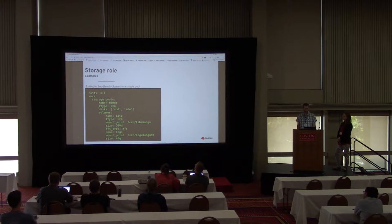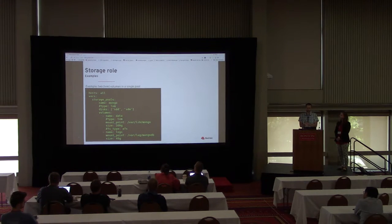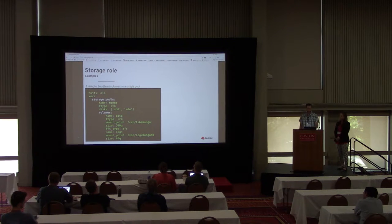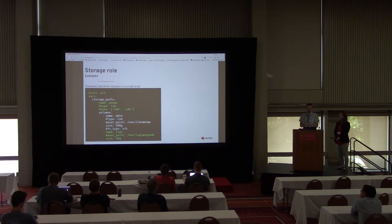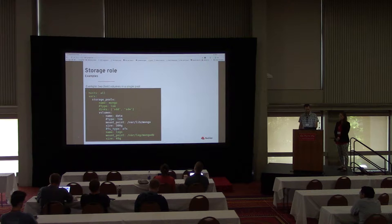The next example is a little more complicated — creating a pool, which in this case translates to an LVM volume group, to store data for a MongoDB installation with two volumes: one for data and one for logs. You add an item to the storage_pools list, give it a name, optionally specify the type as LVM, say which disks to use, then create a list of volumes in that pool. All you need to define a volume is a name, mount point, and size — defaults are commented out here just as a visual aid.